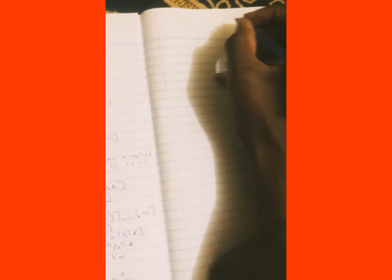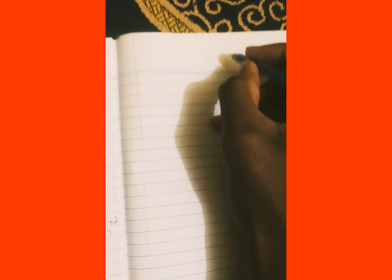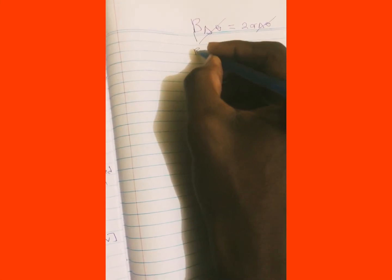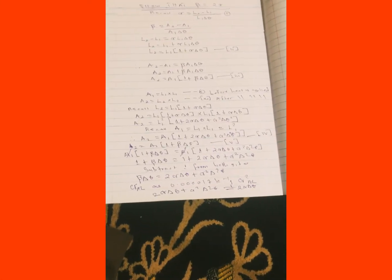So beta times the change in temperature equals 2 alpha times the change in temperature. When you divide both sides by the change in temperature, you are left with beta equals twice alpha. Thank you.